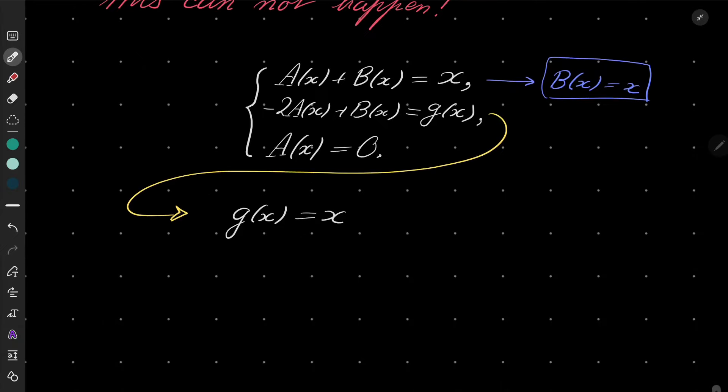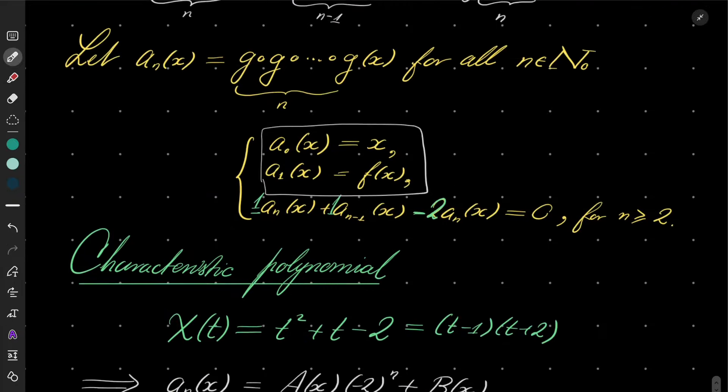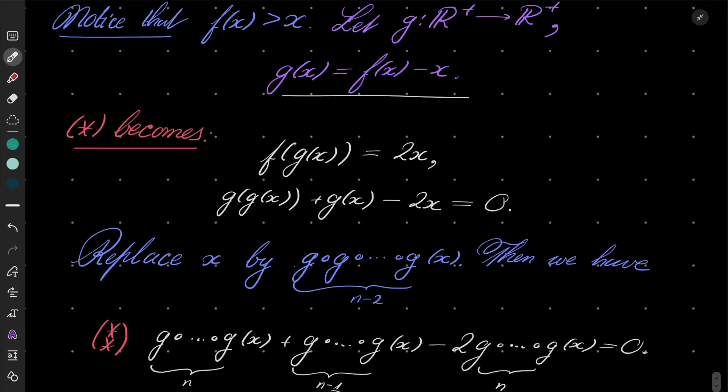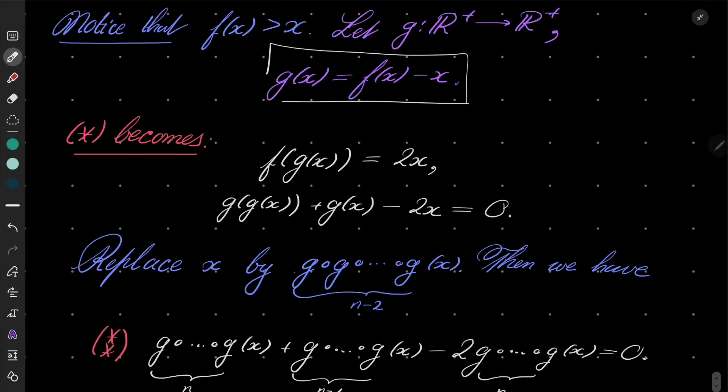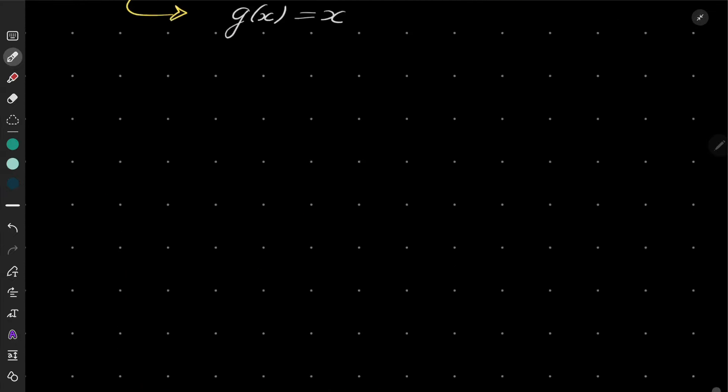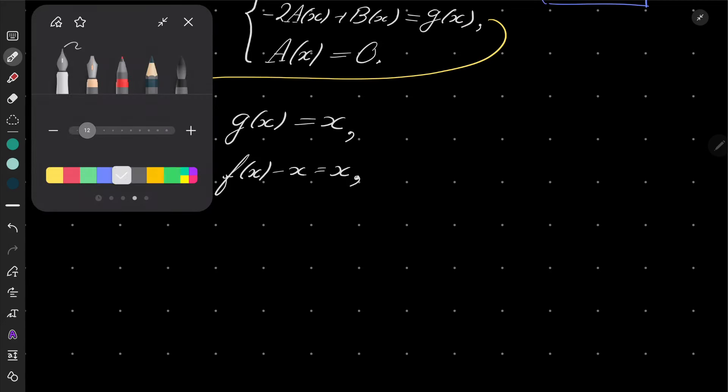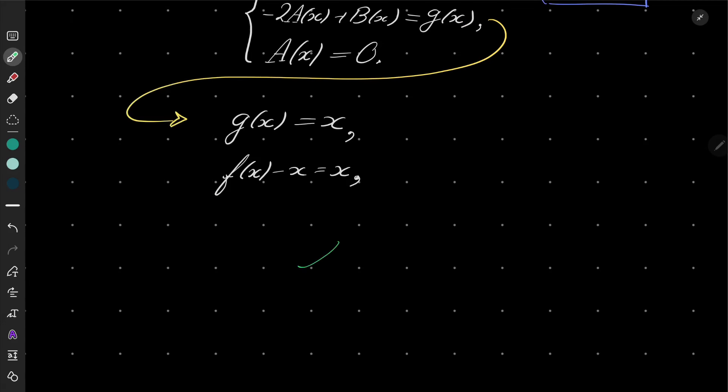Perfect. But what was g(x)? Well, g(x) was defined to be f(x) - x. In other words, f(x) - x equals x, and that means f(x) equals 2x. And that's the only possible solution.